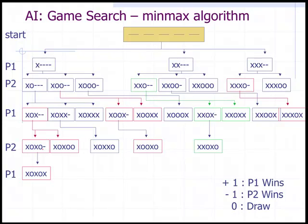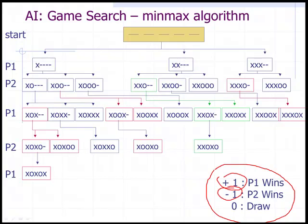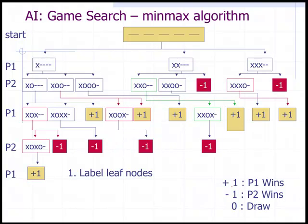First, the concept of a zero-sum game: if player one wins, then player two must lose, or they could draw — there can only be one winner and one loser, or a draw. Under those scenarios, player one winning is assigned a plus one, player two winning is assigned a negative one, and the sum of these two outcomes equals zero. The first thing you do is label all the leaf nodes where the game has terminated — in this case player one wins gets plus one, player two wins gets negative one.